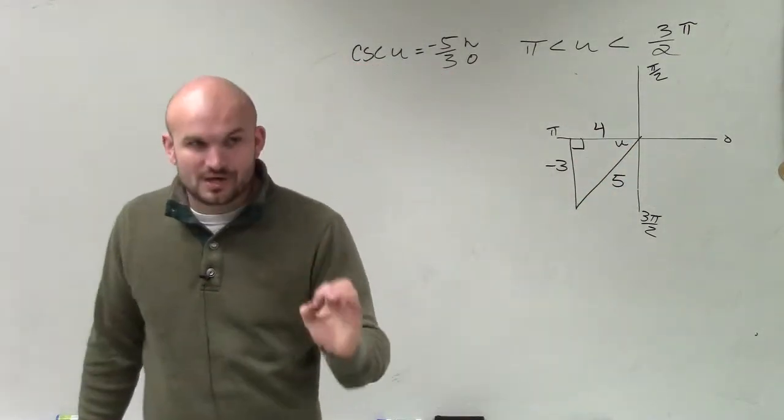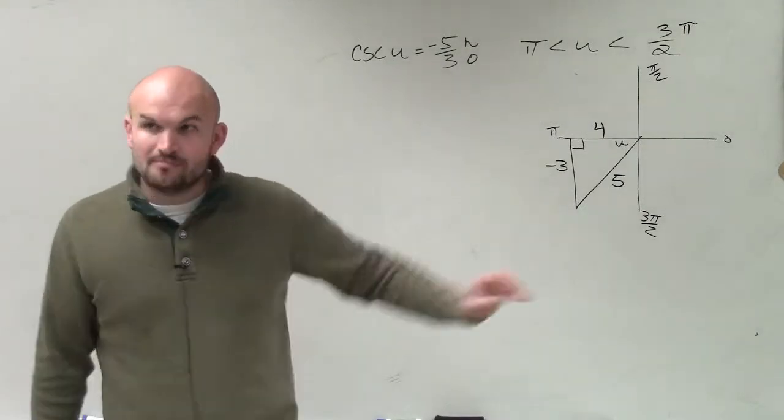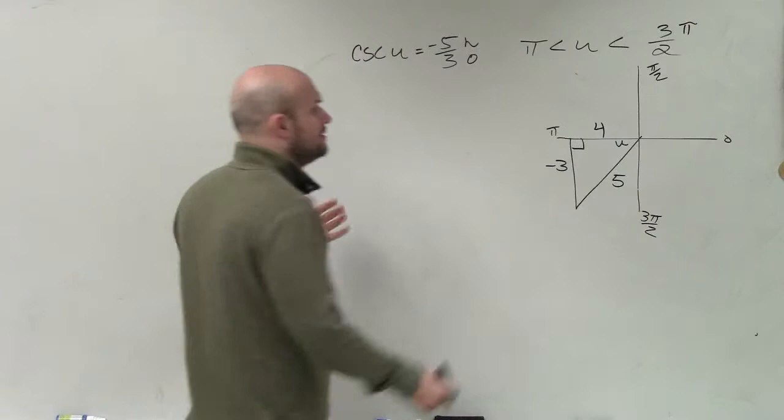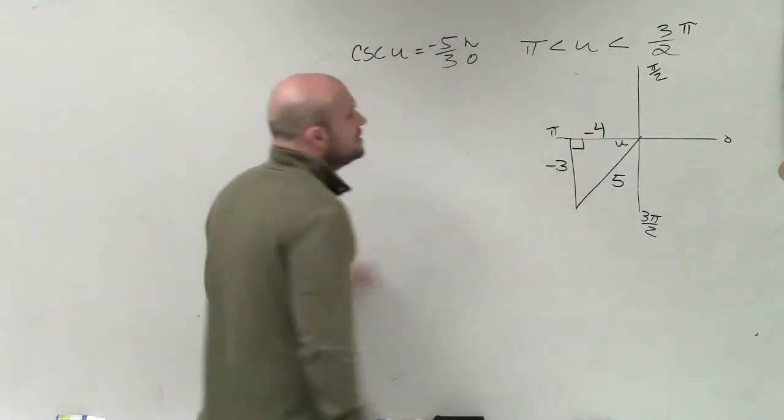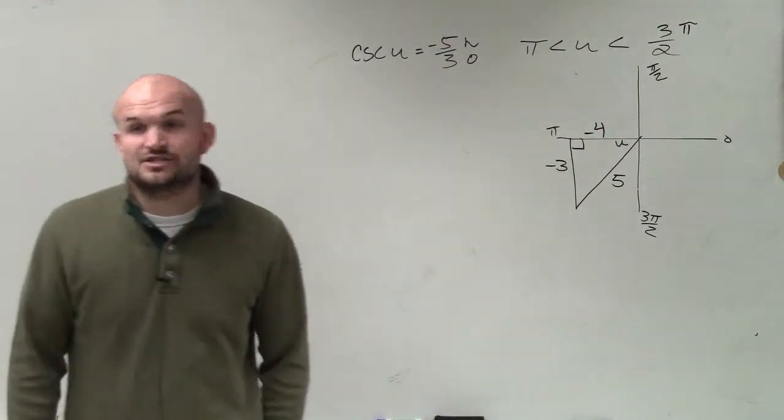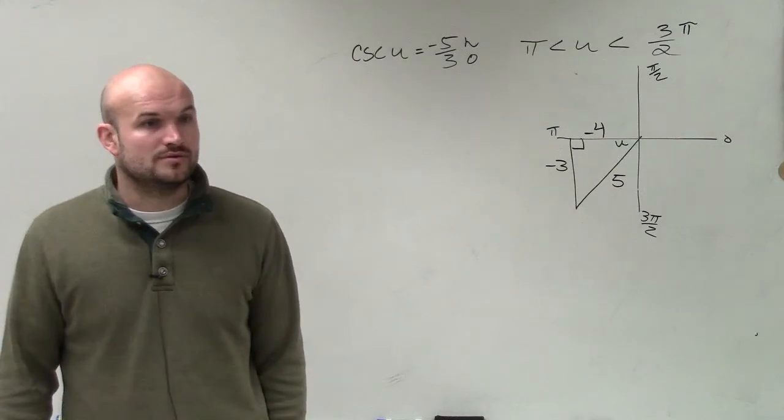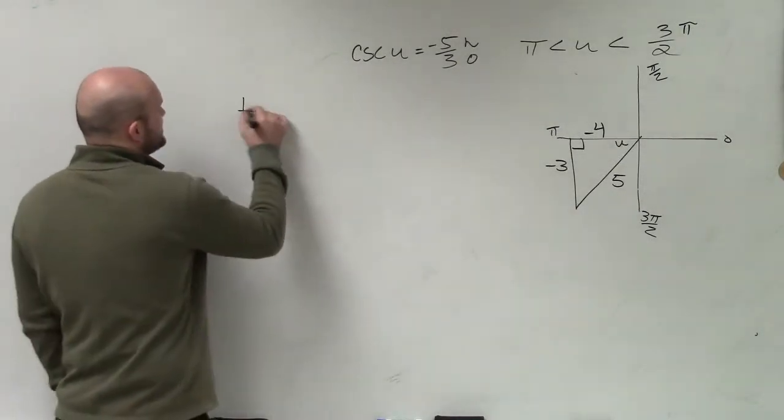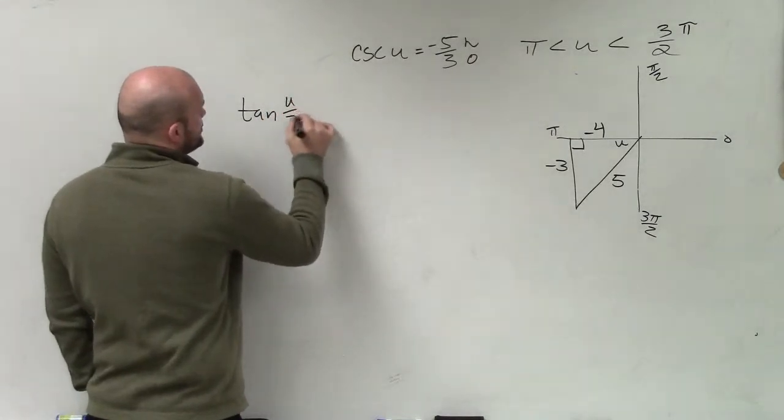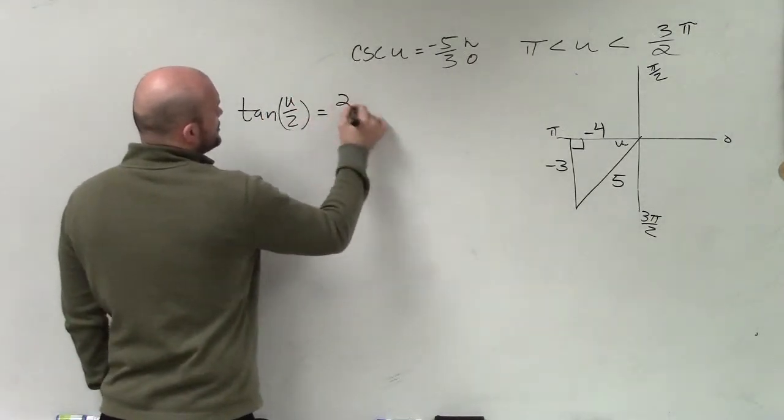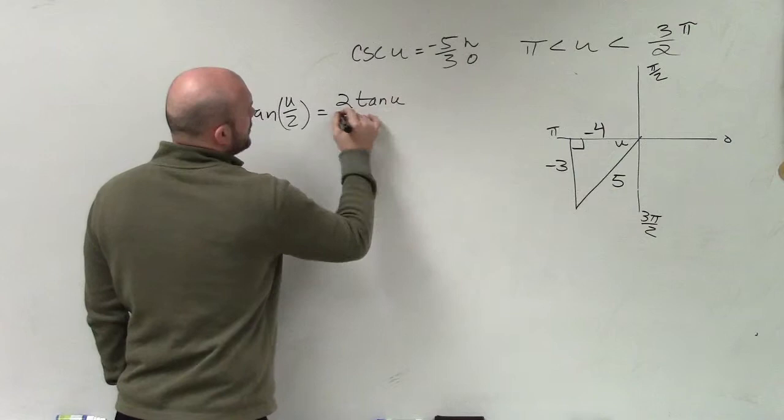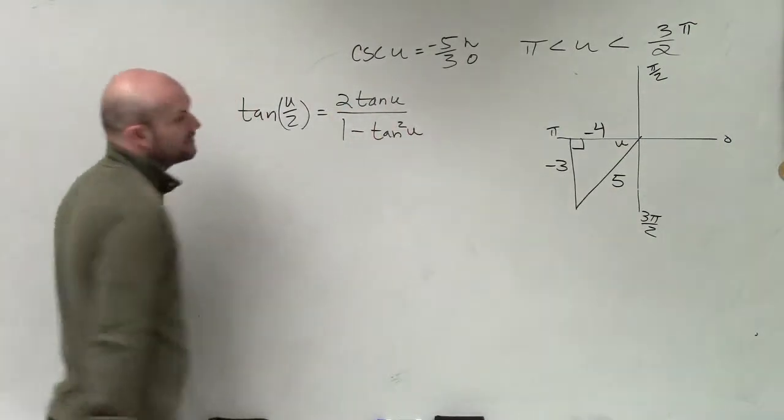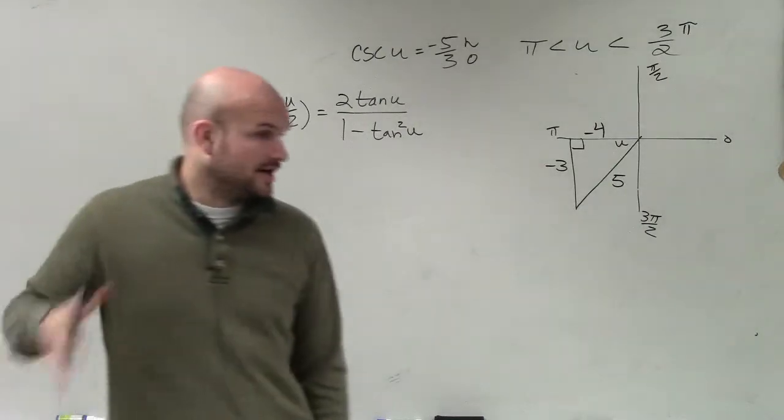Now I can apply Pythagorean theorem, or I can also understand that this is a Pythagorean triple, and this value is going to be 4. But since the triangle is in the third quadrant, based on that constraint, that 4 is now a negative. So now I'm asking you to do the tangent of u over 2. Half angle. So the tangent of u over 2 is equal to 2 tangent of u over 1 minus tangent squared of u. So that's the formula you'll be provided.